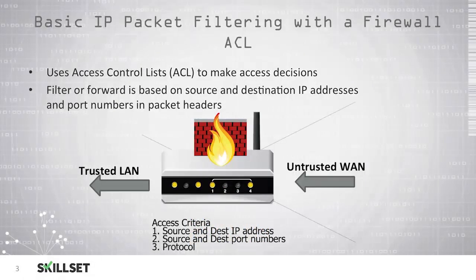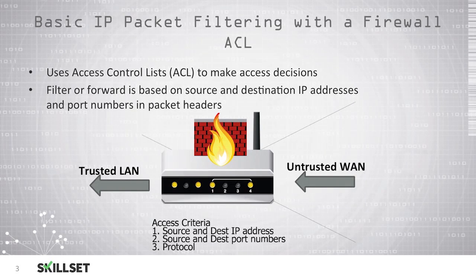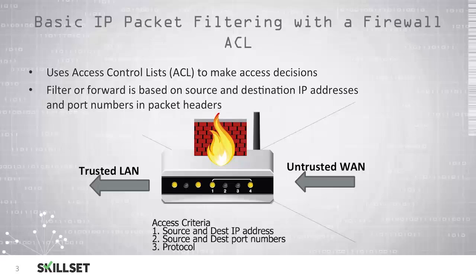Our most basic type of firewall is an IP, or internet protocol, packet filtering firewall, which uses an access control list to decide whether traffic should be permitted or denied. They have the ability to filter traffic and block it or forward traffic to its intended destination depending on whether or not the traffic is permitted by the access control lists.